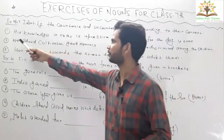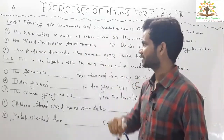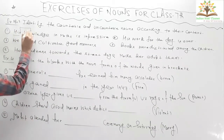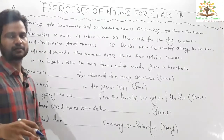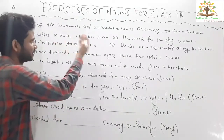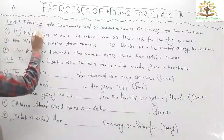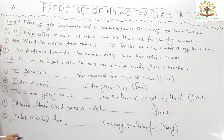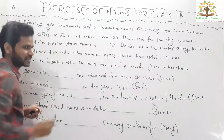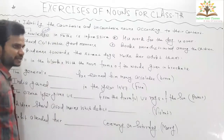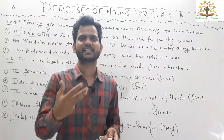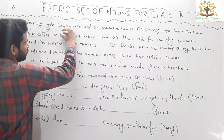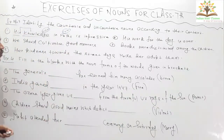Question number one: 'His knowledge in math is impressive.' After a possessive adjective we always get a noun, and these nouns may be countable or uncountable. Here, knowledge is an uncountable noun, as I have already explained. Math is a subject — whenever we talk about any subject, these are also uncountable nouns.